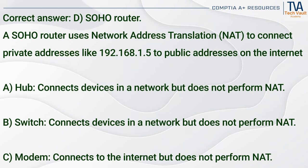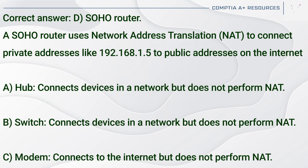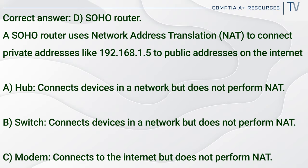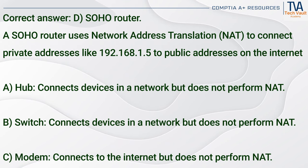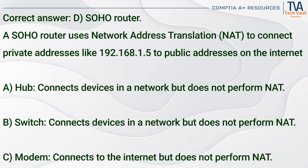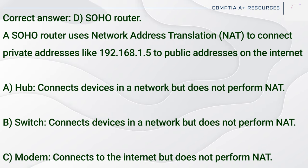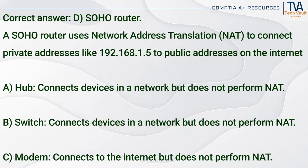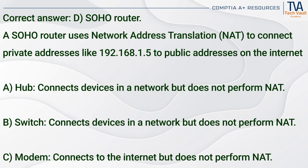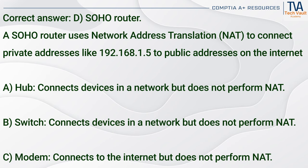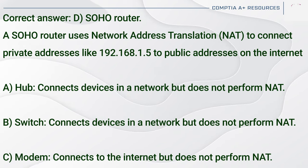Correct answer: D. SOHO router. A SOHO router uses Network Address Translation (NAT) to connect private addresses like 192.168.1.5 to public addresses on the internet. A hub (A) connects devices in a network but does not perform NAT. A switch (B) connects devices in a network but does not perform NAT. A modem (C) connects to the internet but does not perform NAT.